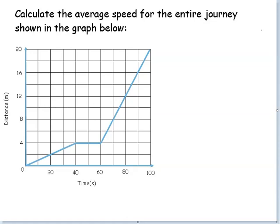What we have to do is use the equation: speed equals the total distance divided by the total time. So the average speed for this journey is